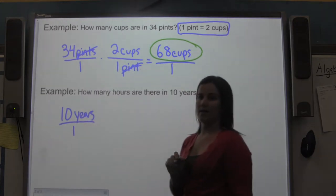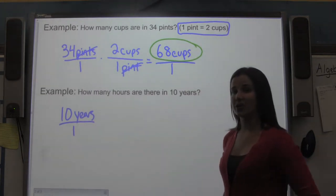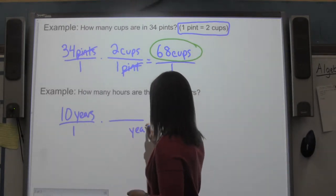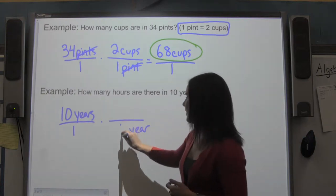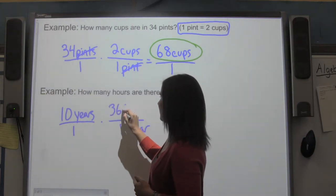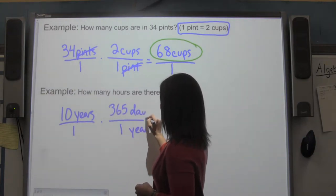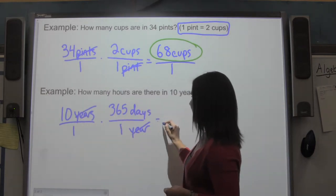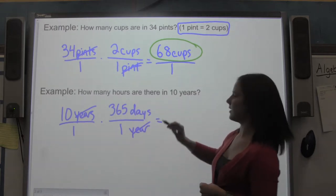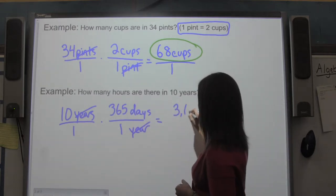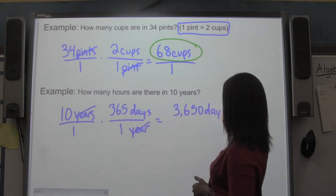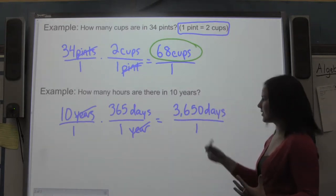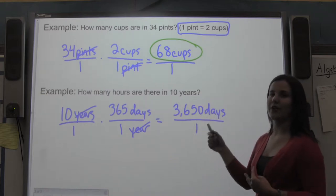I'm going to put 10 years over 1, because I need a fraction to multiply fractions. I'll multiply so that years are in the denominator. I know that one year has 365 days. After the years cancel, I have 10 times 365, which is 3,650 days over 1. So 10 years equals 3,650 days.